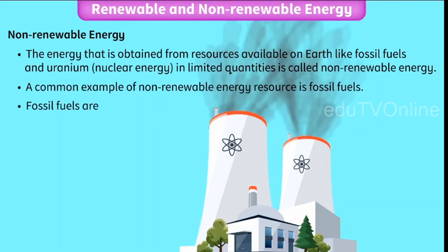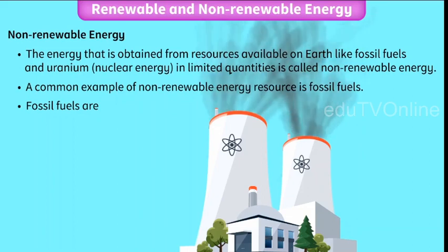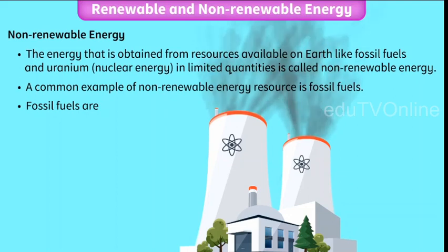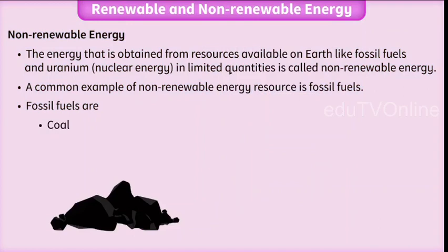Fossil fuels are resources like coal, petroleum, and natural gas, formed by the dead remains of plants and animals over millions of years. Coal is the cheapest and most abundant solid fossil fuel present on earth and is widely used for the generation of electricity. It is extracted from mines present under the earth's surface.